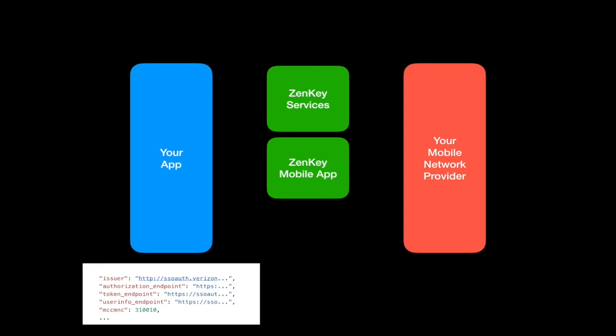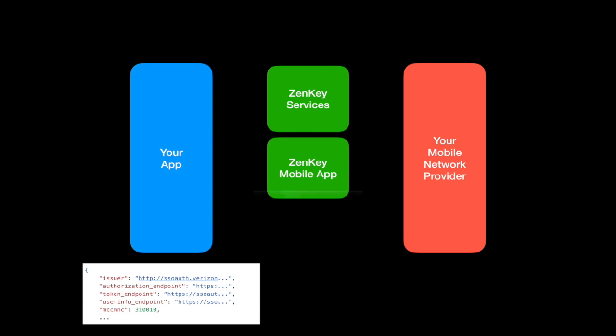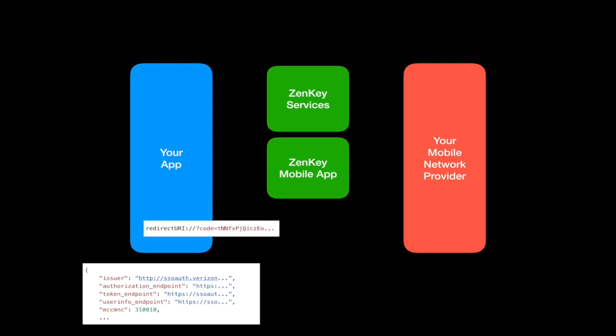Second, we'll seek the user's authorization through the ZenKey mobile app. Here, the user will add their consent along with a PIN number or biometric. This — the strong link between the user, their phone, and the mobile network — is what forms ZenKey's uniquely high bar for security.